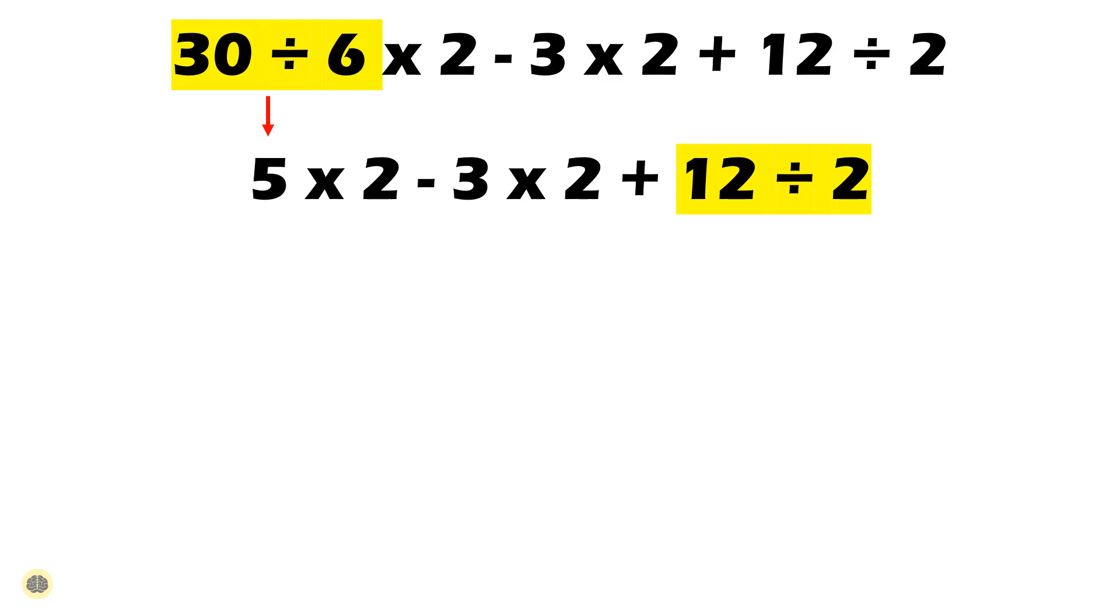In step 2, again perform the division. Next we continue with the remaining division operation that is 12 divided by 2 which is equal to 6. The expression now looks like 5 times 2 minus 3 times 2 plus 6.